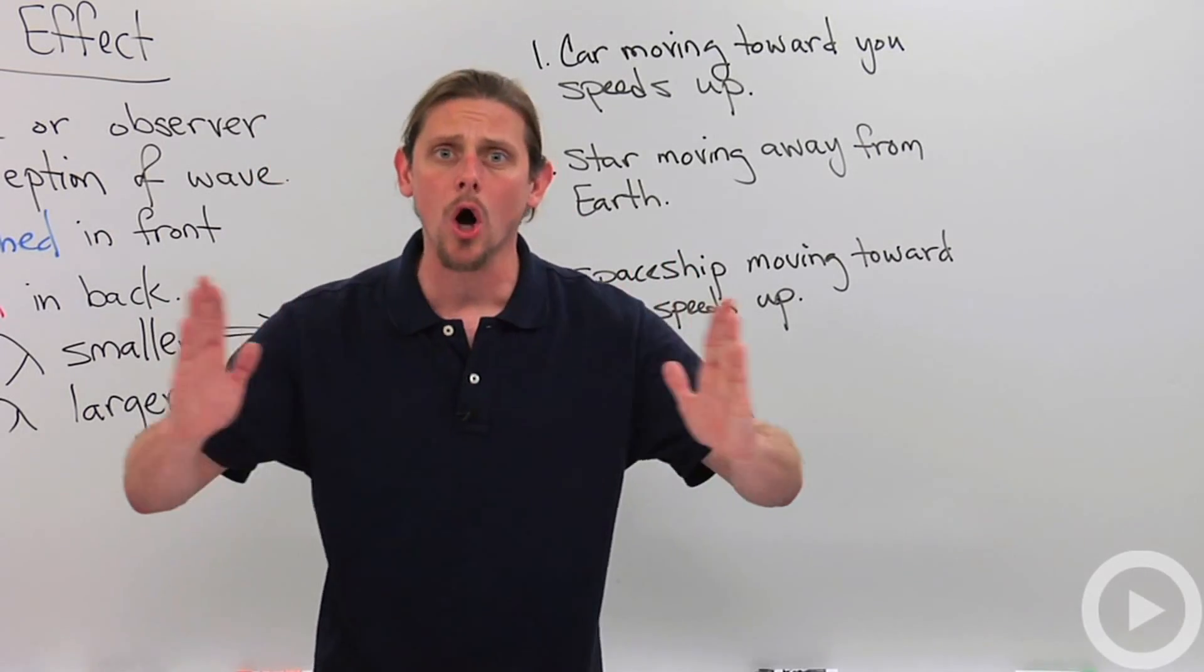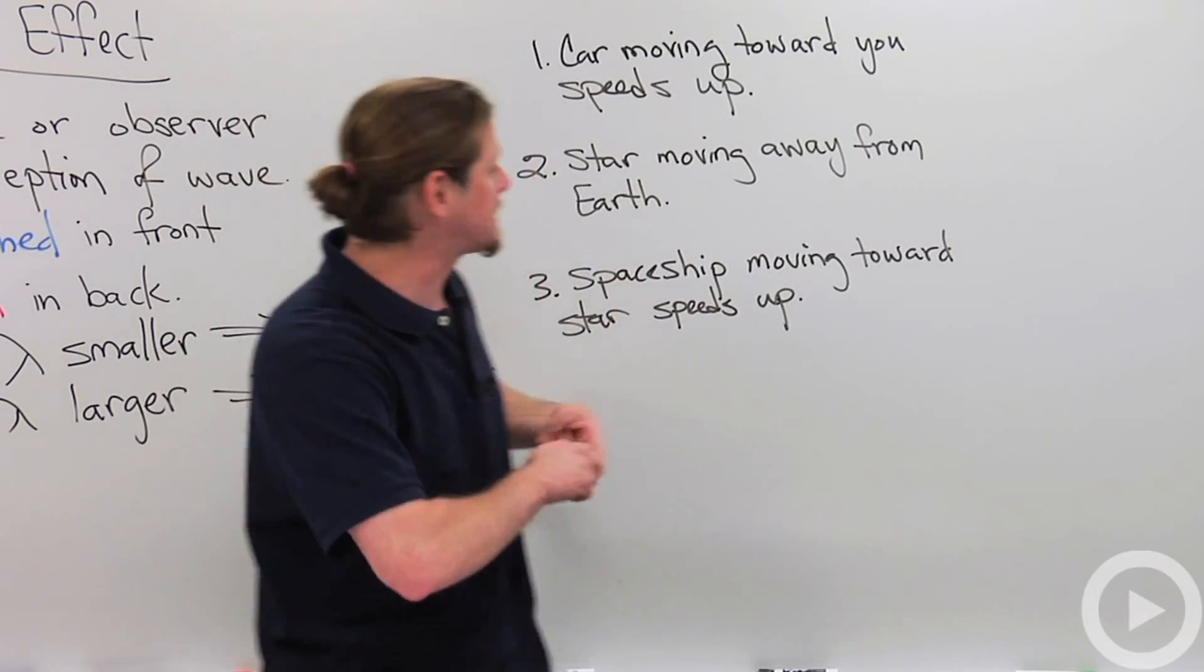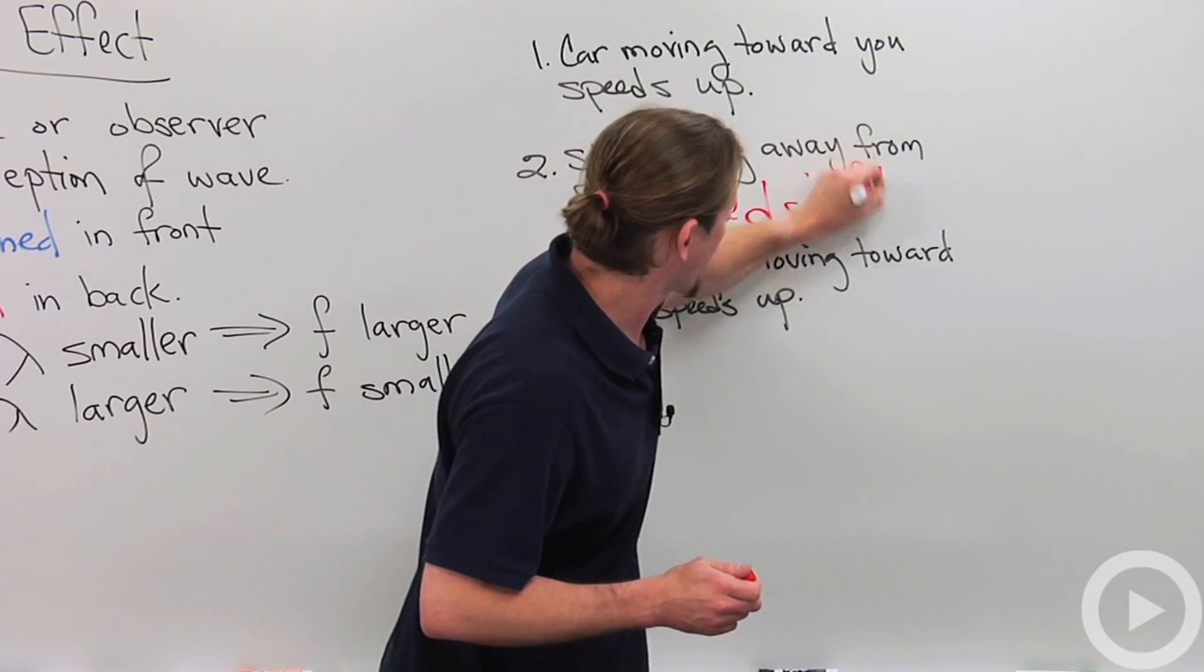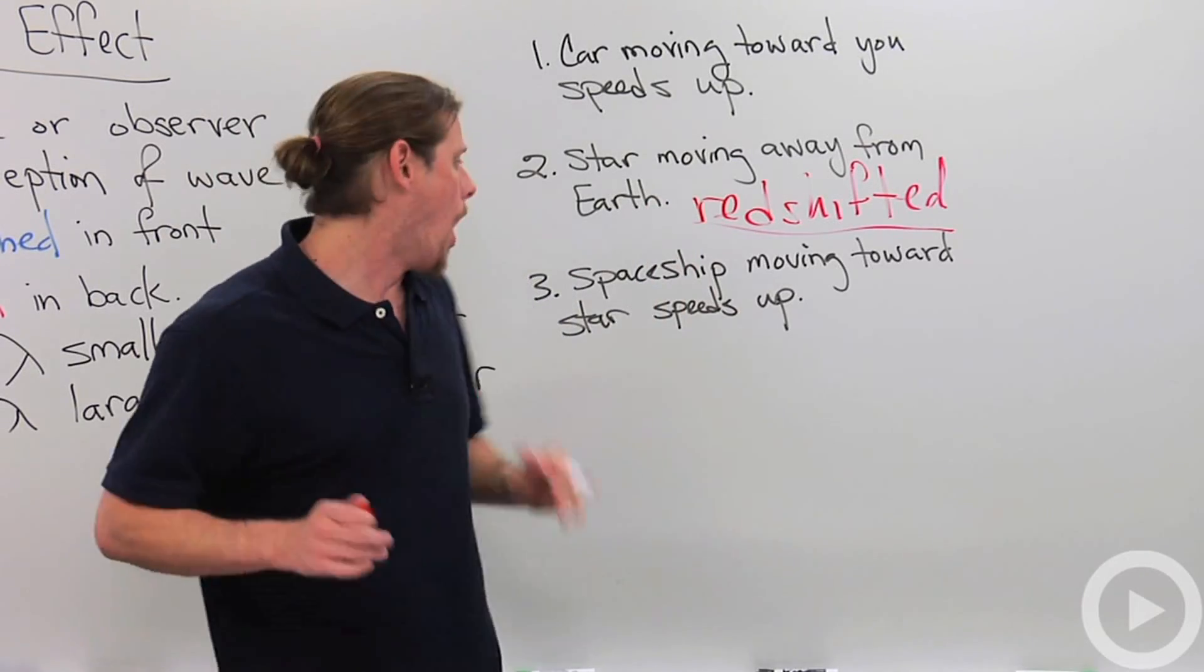So when things have a larger wavelength, we say that they are redshifted. So, this light will be redshifted. Redshifted means moving away.